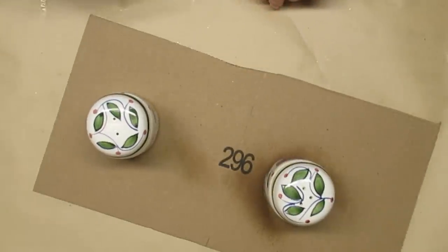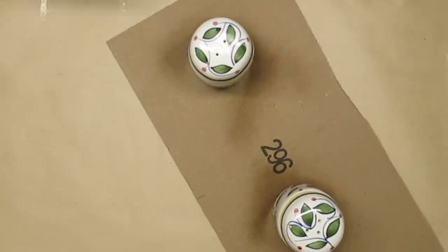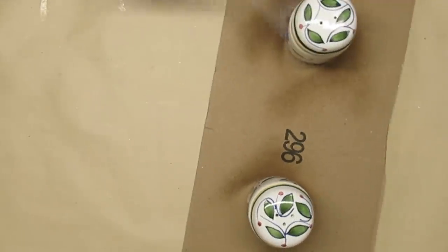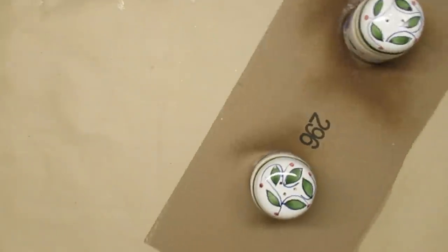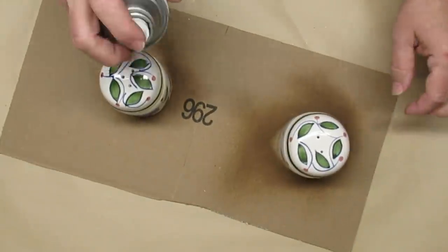The first thing I'm going to do is spray them with some Rust-Oleum Clear Matte. That's going to help my chalk paint stick lots better to this shiny surface.